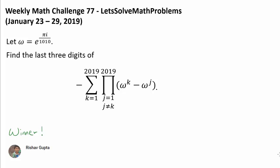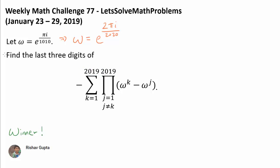This is one of the shortest weekly math challenges yet, but certainly not the easiest. Let omega be e to the pi i divided by 1010. So omega is the 2020th root of unity, because omega is e to the 2 pi i divided by 2020. And we have a bunch of 2019s in our expression, which is intimately related to 2020. We wish to find the last three digits of the given expression.